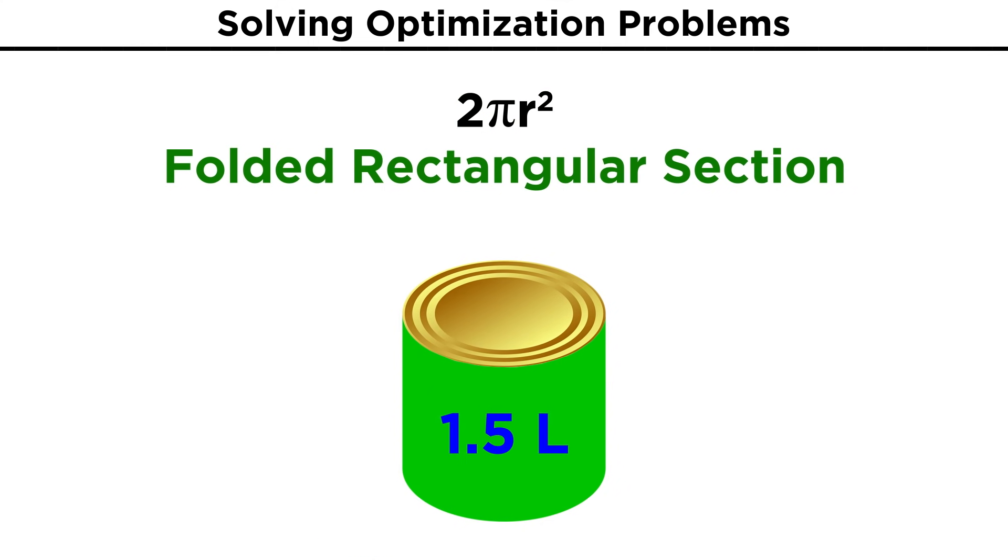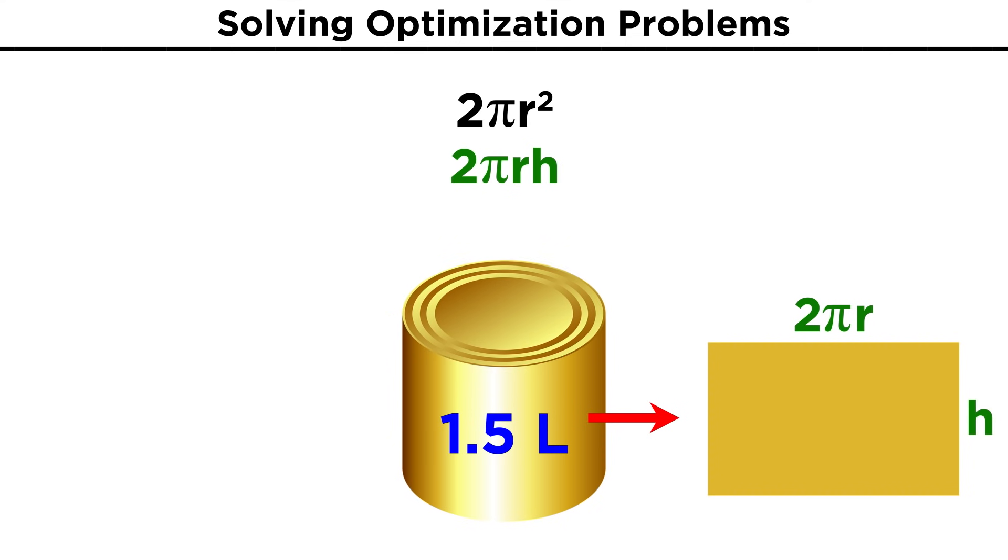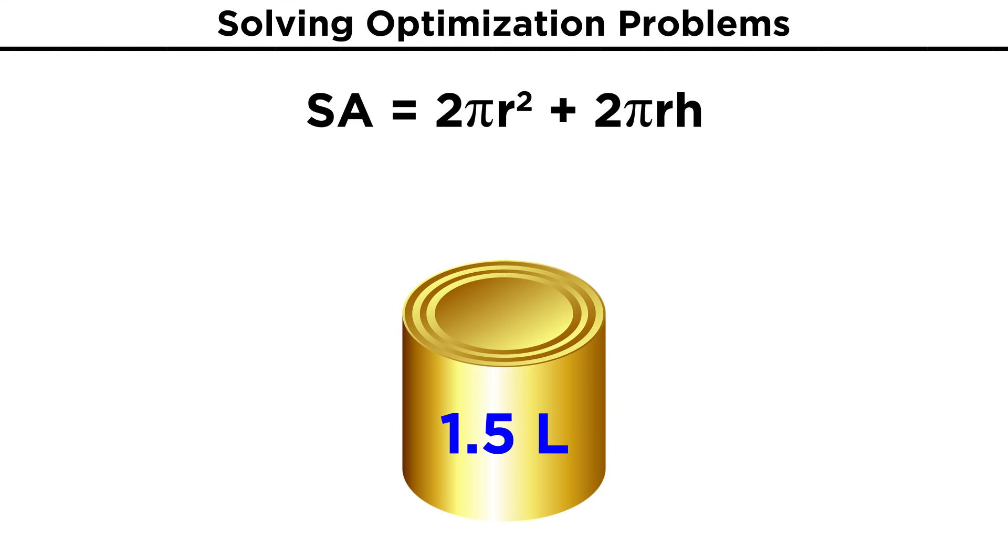Then we have this whole section, which is essentially a rectangle folded back on itself. If we were to unfold this, it would have a base length of 2πr, as that's the circumference of the base, and a height which we can represent as h. The area of the rectangle will simply be their product, 2πr times h. The total surface area will therefore be the sum of these two, or 2πr² + 2πrh.